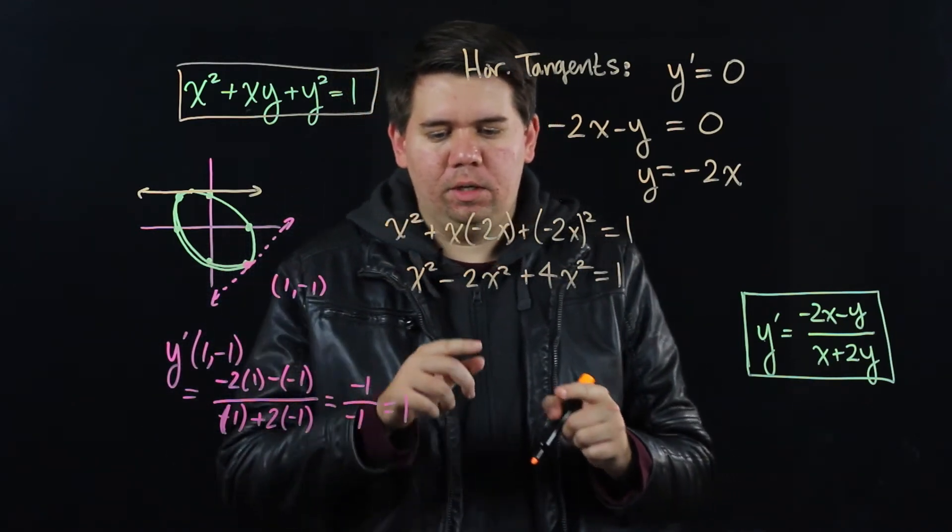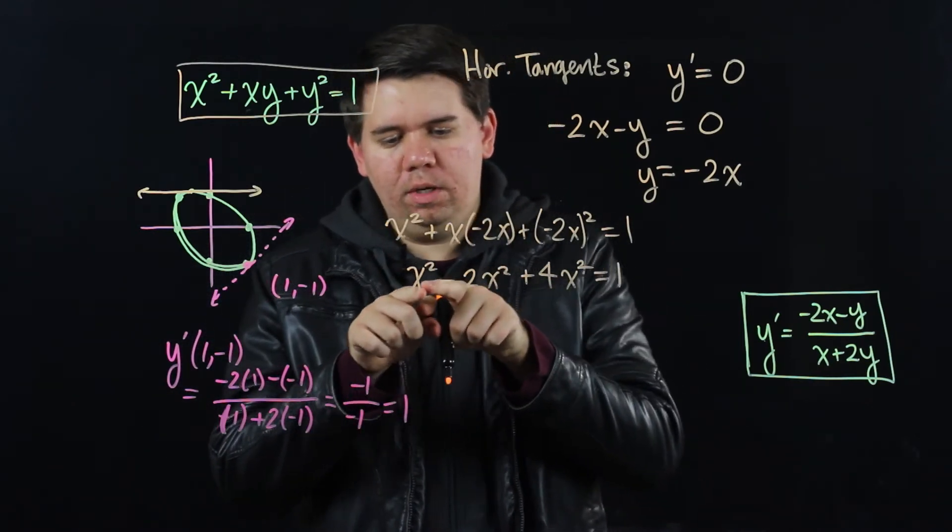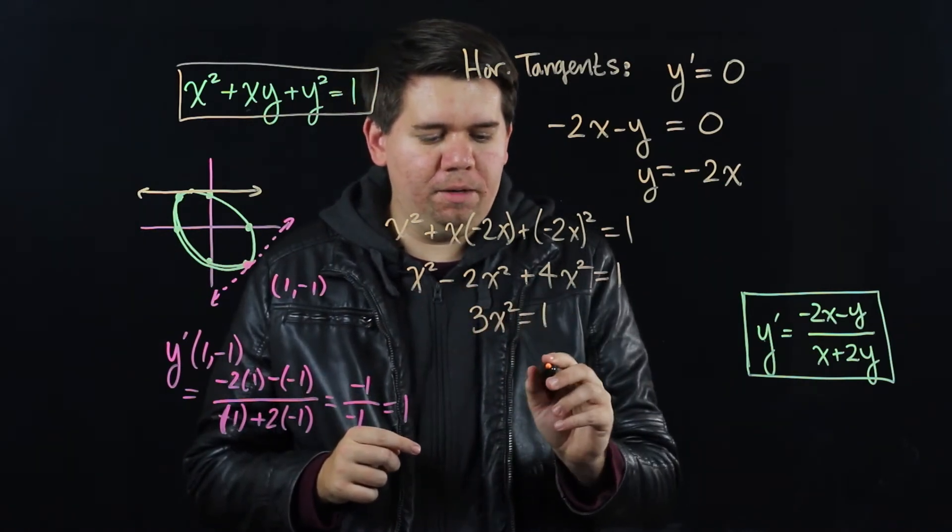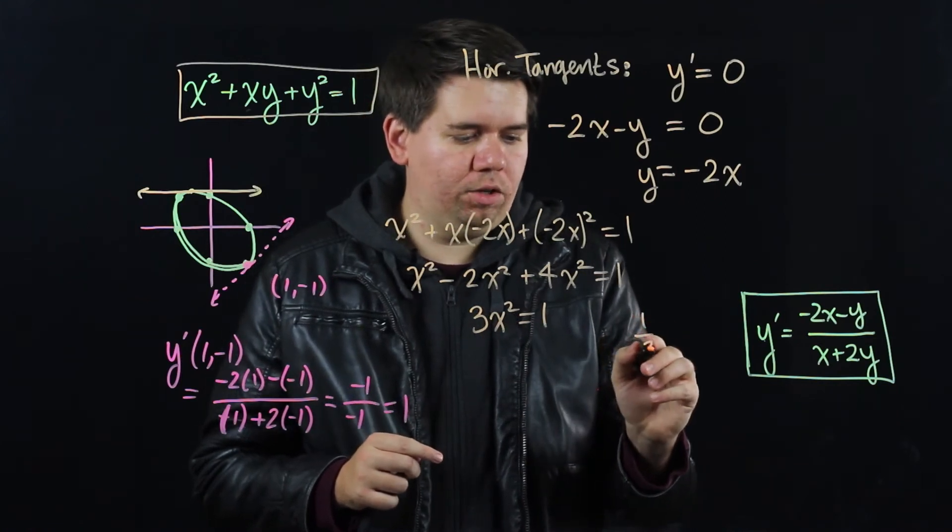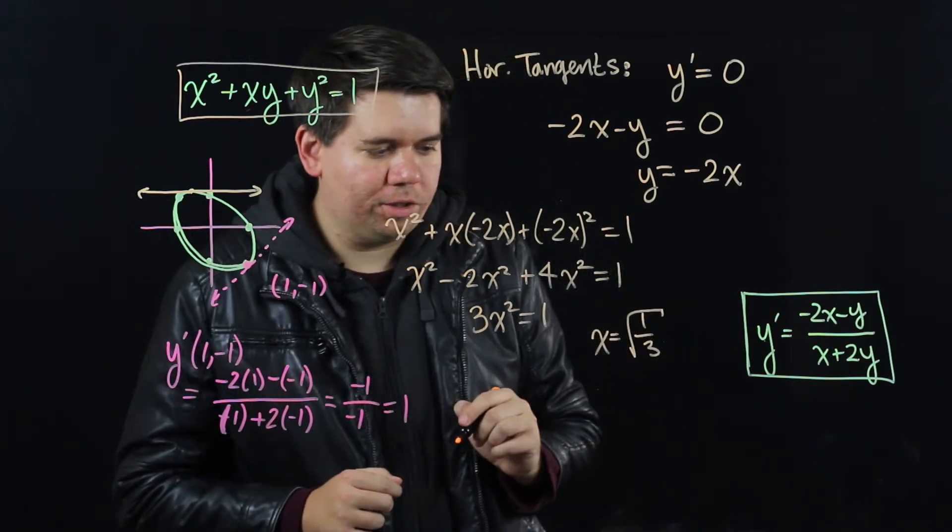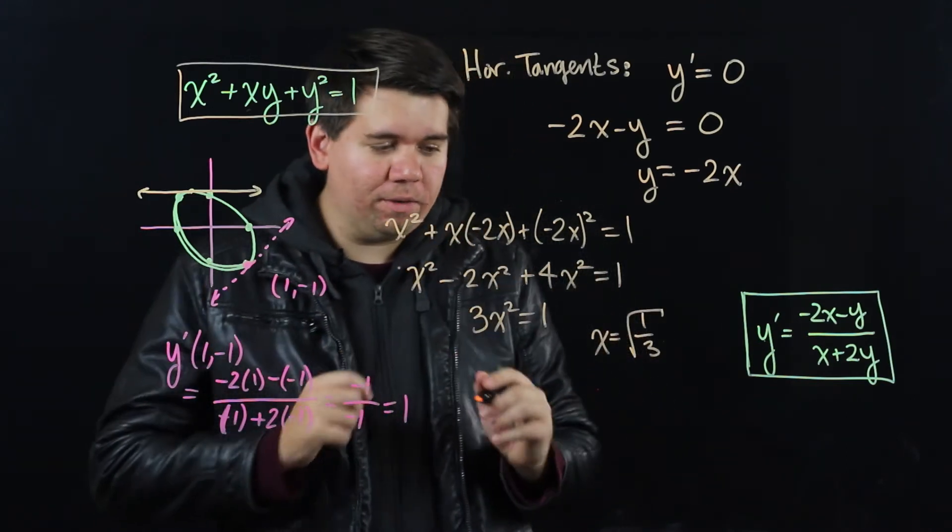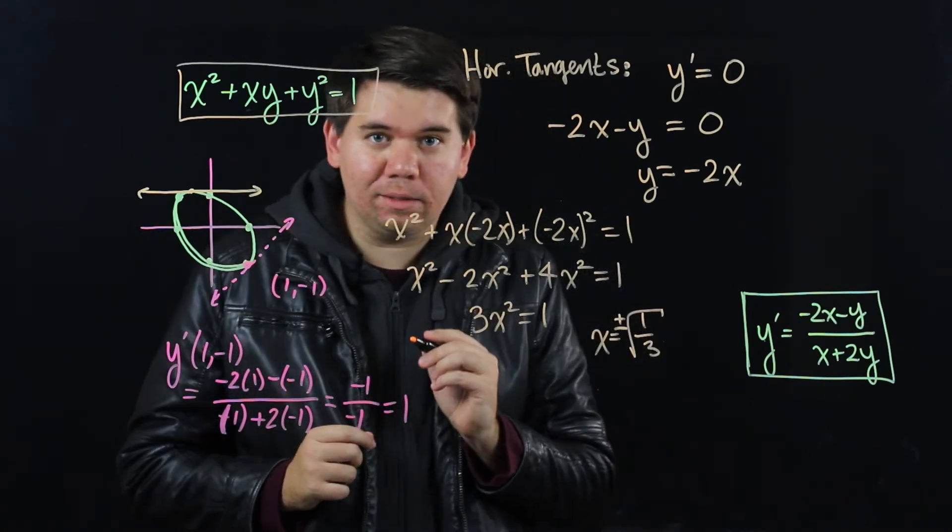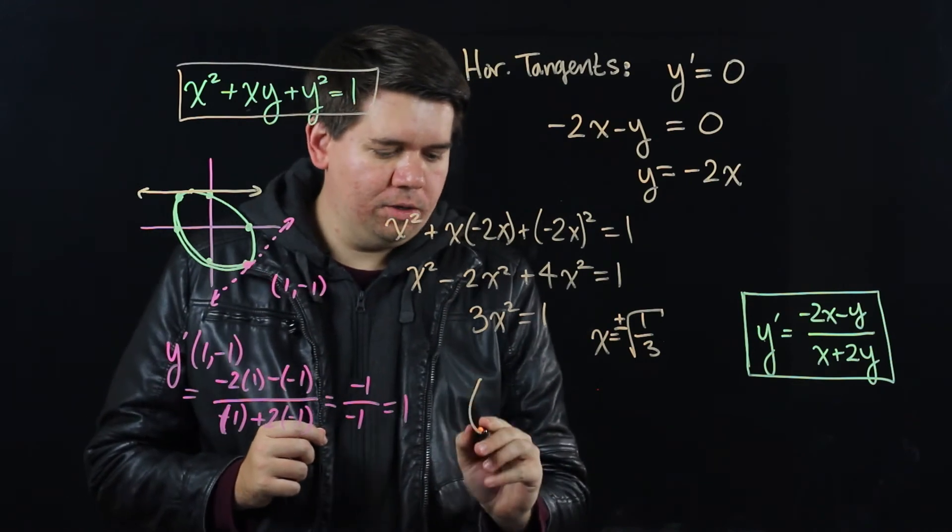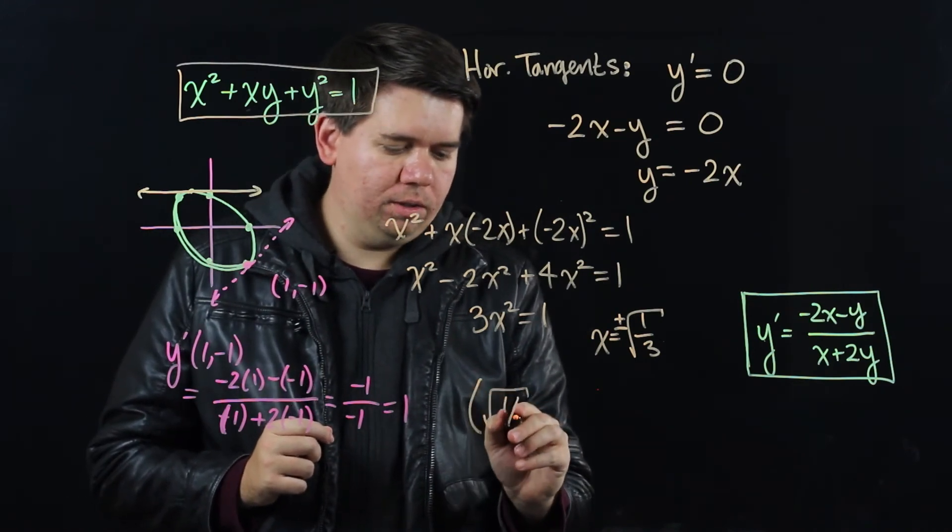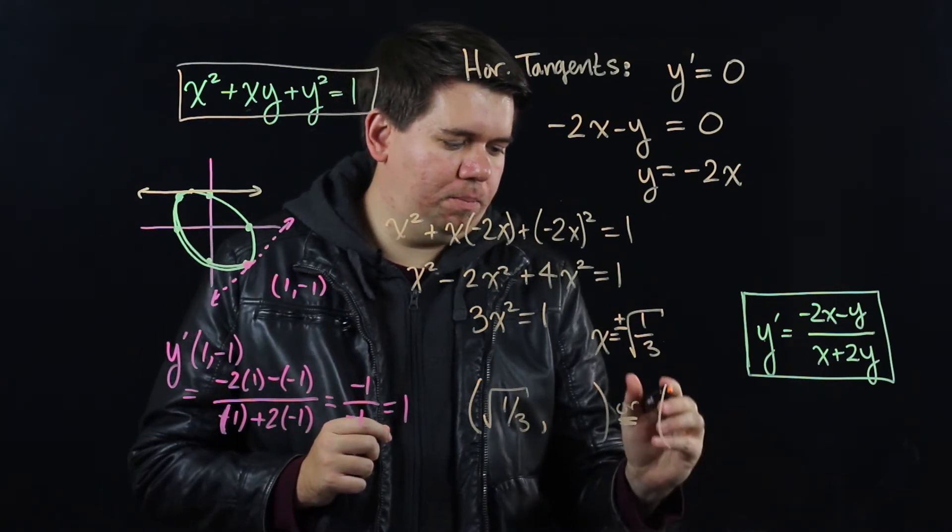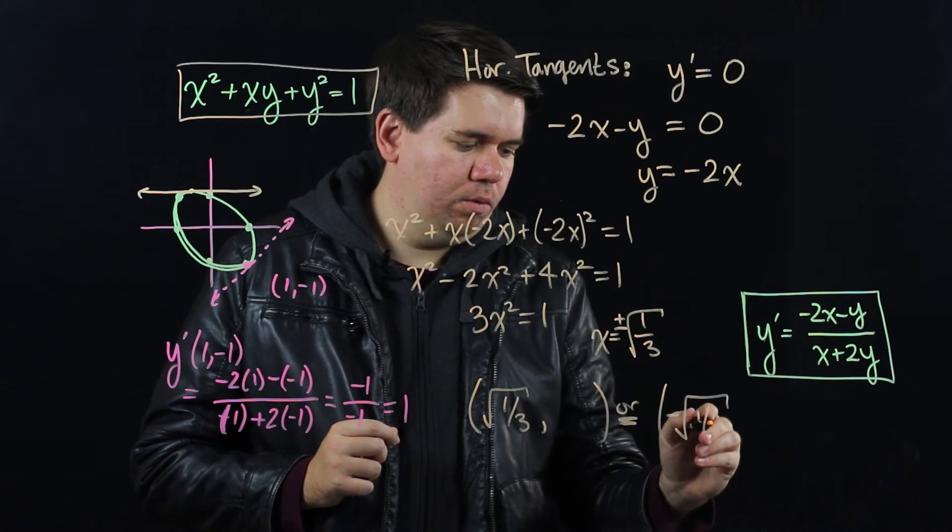Let's simplify a little bit. 4 minus 2 is 2 plus 1 is 3, so 3x squared is 1. Dividing by the 3, we get 1 third. So x squared is 1 third. So x is the square root of 1 third. Actually, not just the square root of 1 third. The plus or minus square root of 1 third. You have x could be 1 third or your x could be negative 1 third.